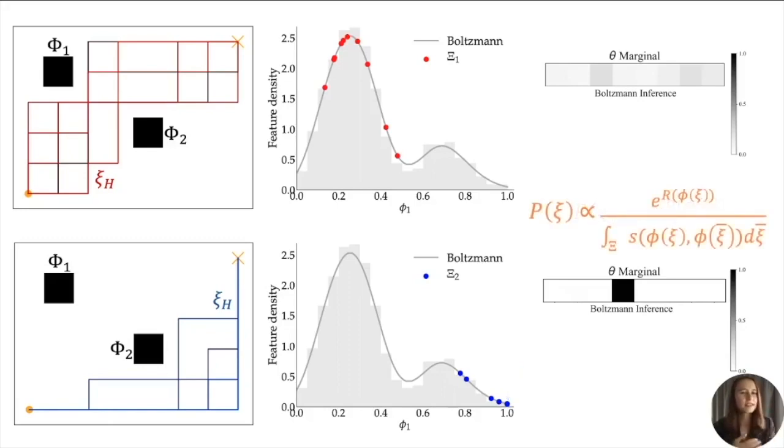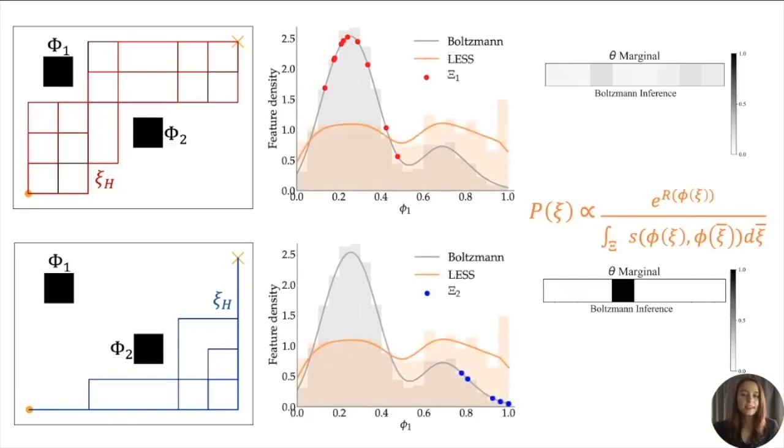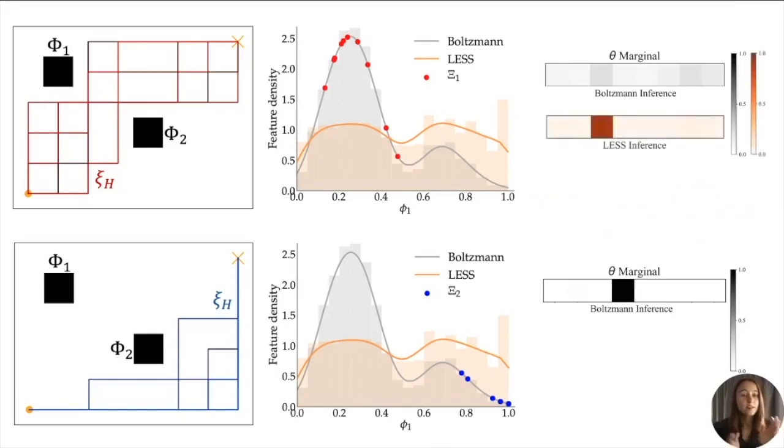Now, how does LESS solve this problem? The way it does so is by flattening the curve, regulating the effect that similarity between trajectories has on their probabilities of being chosen. The result is that in the first grid, LESS confidently identifies the ground truth because it doesn't under-learn. Whereas in the second grid, LESS doesn't over-learn and recognizes that the trajectories give evidence for two objectives.